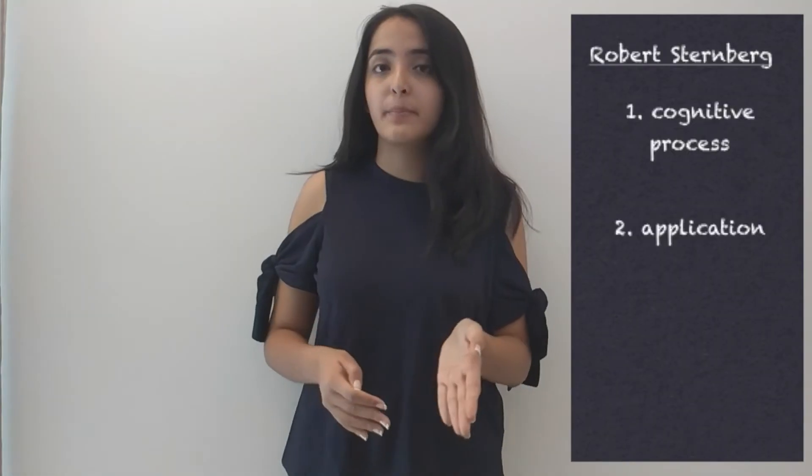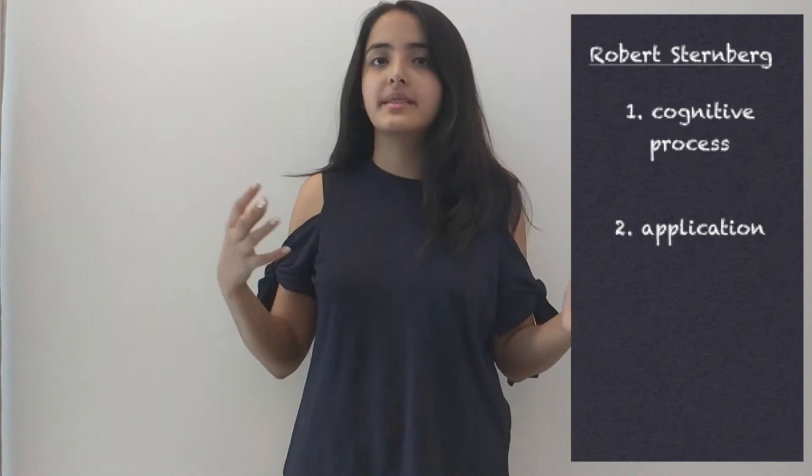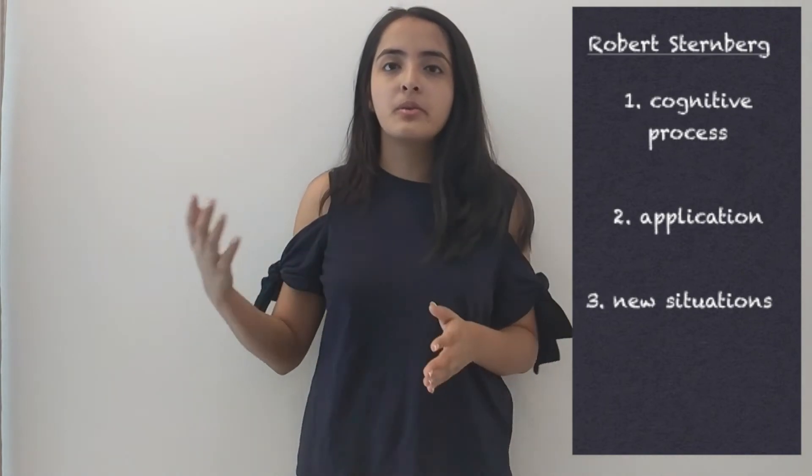An alternative approach is Sternberg's Triarchic Theory, which looks at intelligence with respect to a person's internal world, external world, and experience. First is the cognitive processes that lead to thought formation. Second is the application of these thoughts in the real world, such as having a good understanding of your strengths and weaknesses. Third is the integration of the internal and external environments through experience — the application of what you've learned.